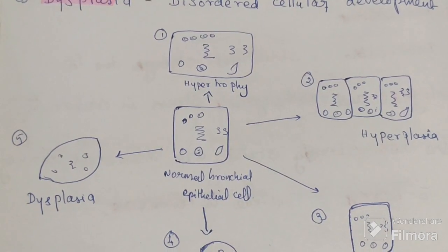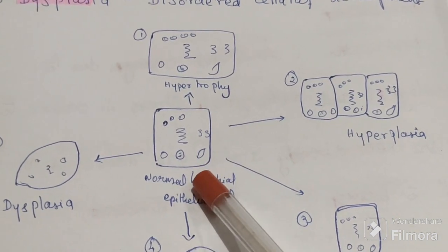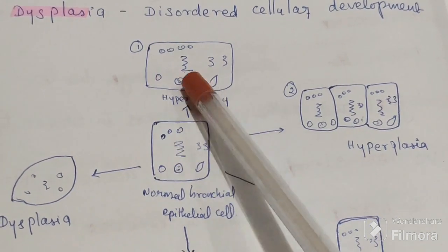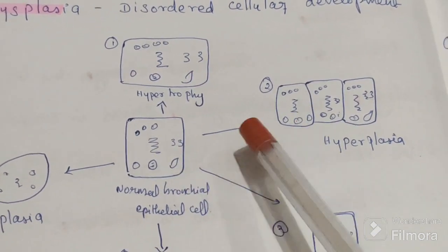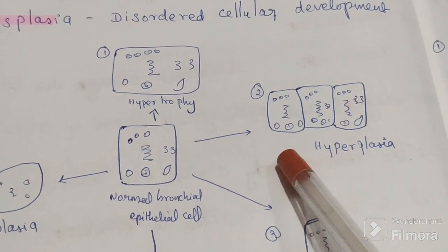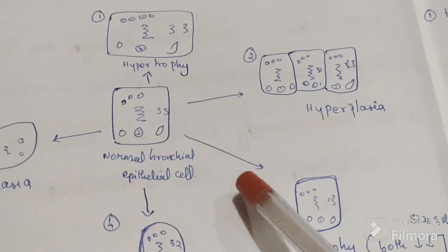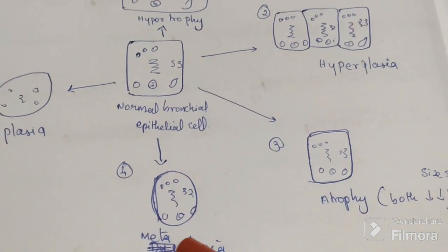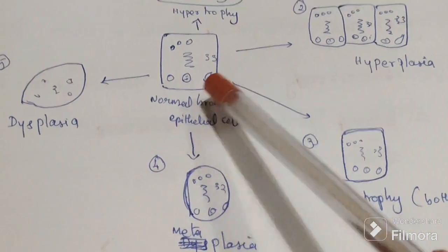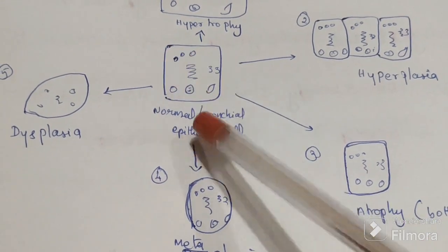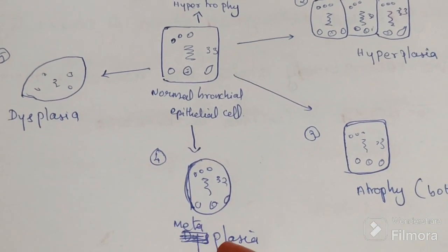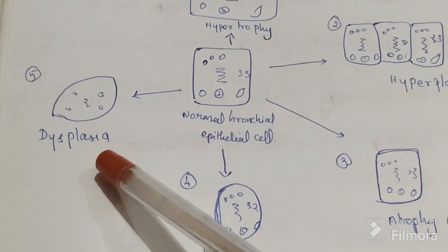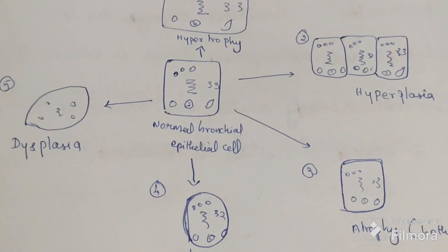Looking at the diagram: normal cells are shown at baseline. When stress comes, hypertrophy shows increase in size, hyperplasia shows increase in number, atrophy shows decrease in size, metaplasia shows one cell type converted to another, and dysplasia shows disordered cellular development — which, if pre-malignant, can convert into tumor cells.